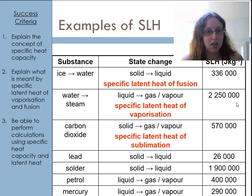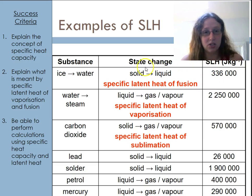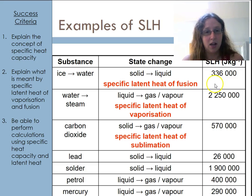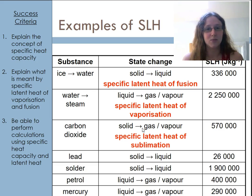Looking at examples: going from ice to water is a solid-to-liquid transition, so this is the specific latent heat of fusion. The same value applies whichever direction you travel — solid to liquid or liquid to solid — it's just a question of whether energy goes in or out. Going between a liquid and a gas in either direction is the specific latent heat of vaporisation. Going directly between a solid and a gas is the specific latent heat of sublimation. These values vary widely and will always be provided to you.